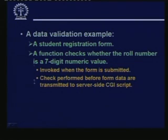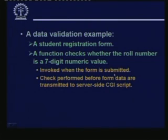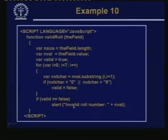Here we show a data validation example which is essentially a student registration form. We have written a function for validation which checks whether the roll number is a 7-digit numeric value or not. This function will be called every time you try to submit the form. After validation, data will be sent to the server-side script. The function name is 'validRoll', and within parentheses is the name of the field, because in a form with several fields you need to specify which field you are validating — that field name is passed as an argument.